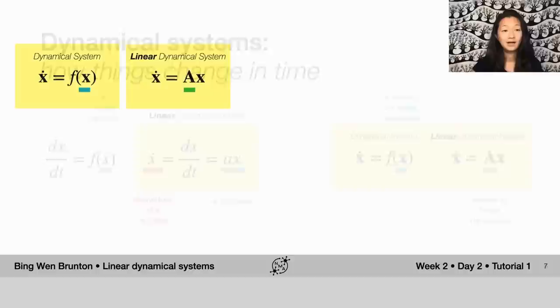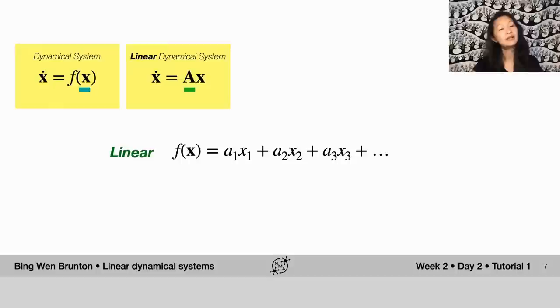And so I'm going to go into a little bit more about what this means to be linear, because this is a really important topic. And so for a system of more than one variable to be linear, here's what we mean. Here are the types of functions of x that are linear.